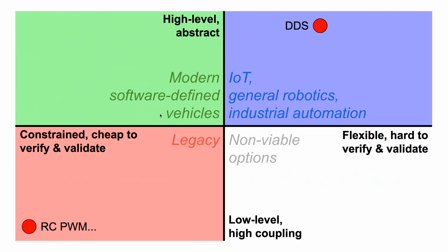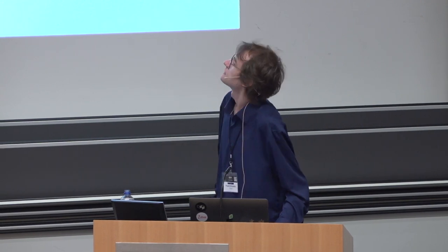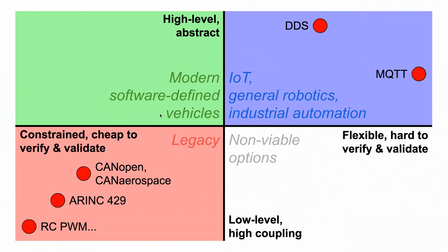DDS — you are probably familiar with that protocol — is widely used in various industrial and IoT applications. At the moment, it doesn't enjoy much use in safety-critical on-board networks because it is very complex. The state space of a DDS deployment is very extensive, making it very difficult to validate and ensure predictable behavior. ARINC 429 is basically a basic signaling protocol which is very low level but at the same time very robust. It has been widely used in aerospace applications for decades, and is still in use.